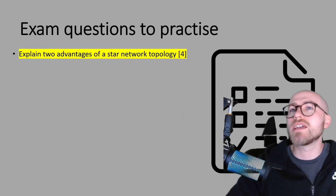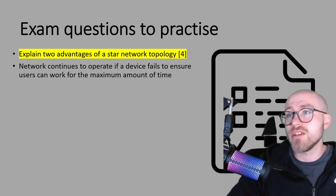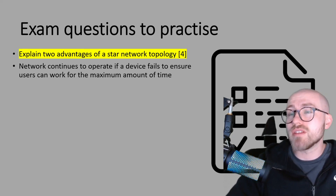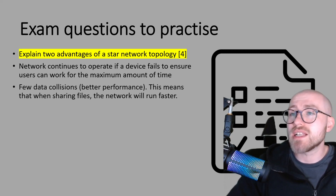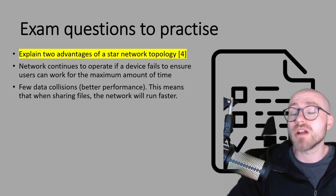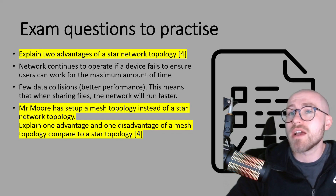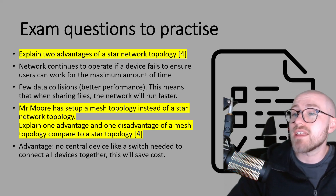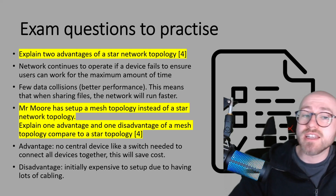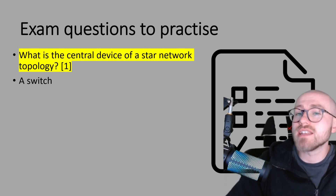Let's run through the answers. For two advantages of a star network topology: the network continues to operate if a device fails — this ensures users can work for the maximum amount of time. Few data collisions means better performance — this means that when sharing files the network will run faster. For the mesh topology question: advantage — no central device like a switch is needed to connect all devices, which saves cost. Disadvantage — initially expensive to set up due to having extensive cabling. And the final question: the central device of a star network topology is a switch, or hub, which is also accepted. That's it for this one, see you next time.